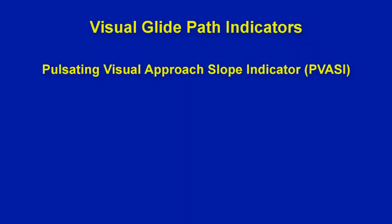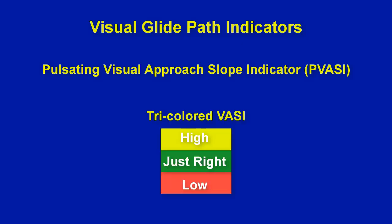The pulsating VASI, or P-VASI, uses a two-color system of steady to pulsating lights to indicate how high or low you are. The tri-colored VASI uses three colors — amber, green, and red — for high on the glide path and too low respectively. These are not in this flight sim and in the real world are not as common, so I won't go into detail on those here.